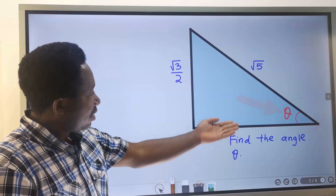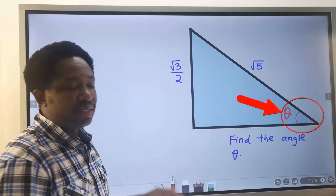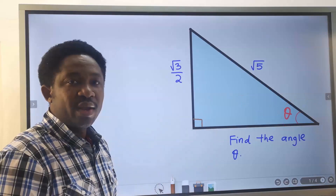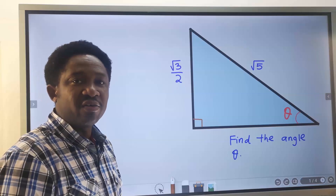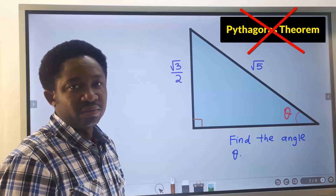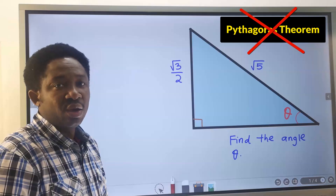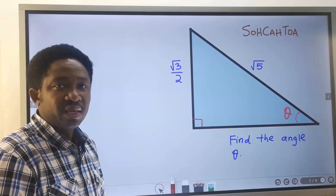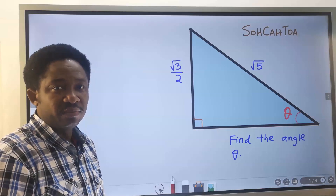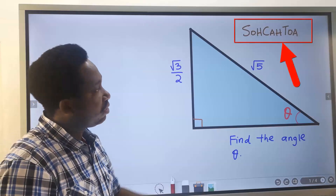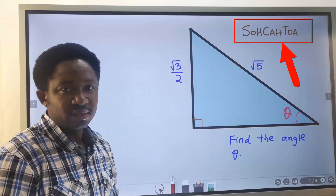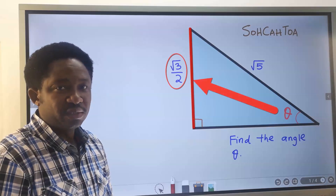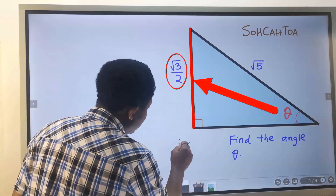Let's find the angle theta in this right angle triangle. When angles are involved in a right angle triangle, you should not think of Pythagoras' theorem — you won't be using it. You will think of SOH-CAH-TOA. The first step is to identify the opposite. Here, the opposite is the side facing the angle.